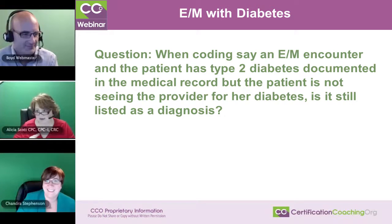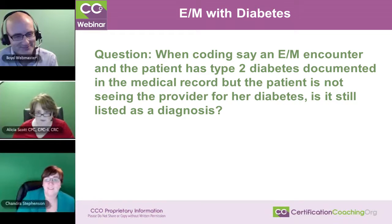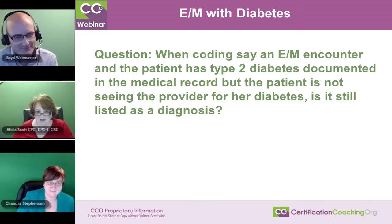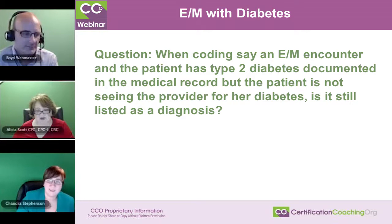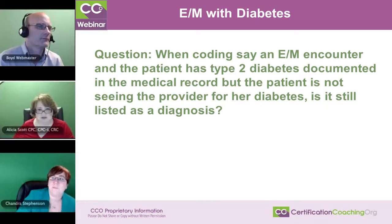Let me take a swing at this one and then Shandra can back me up. Shandra has done much more of this type of thing to answer these questions quickly than I have, but this one I happen to know from a risk adjustment point of view. Any time a patient comes in and they have a chronic condition, especially diabetes, which affects all other body systems, you definitely are going to have it listed as a diagnosis.